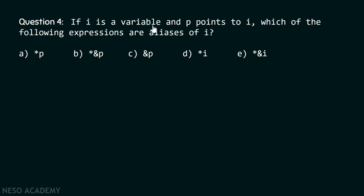If i is a variable and p points to i, which of the following expressions are aliases of i? Is it: (a) `*p`, (b) `*&p`, (c) `&p`, (d) `*i`, or (e) `*&i`? There can be more than one answer. I would encourage you to pause the video for a while and try to answer this on your own.